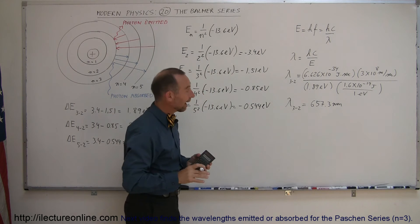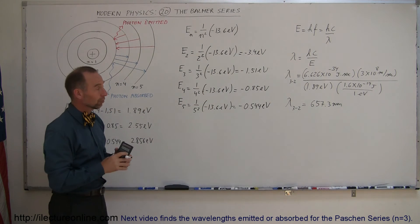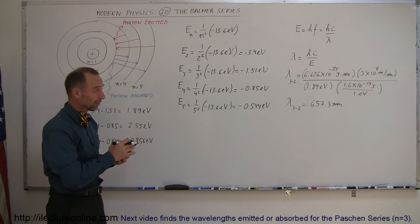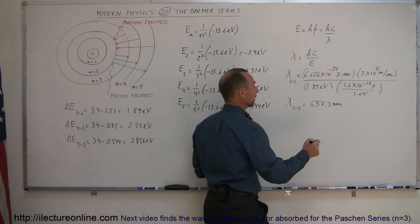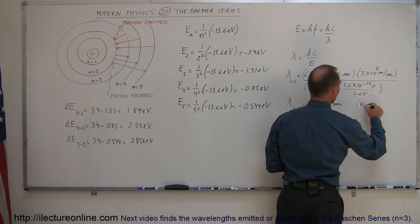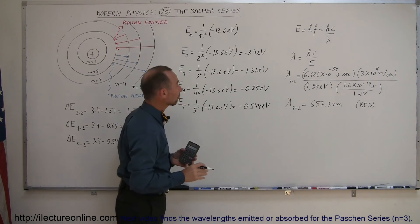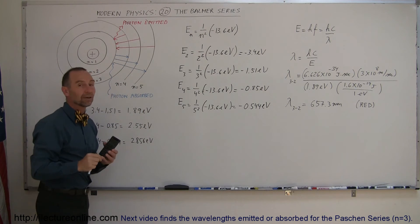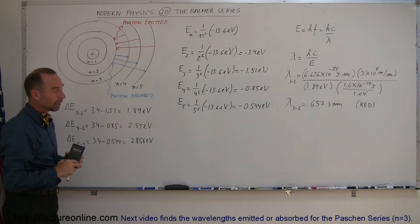That falls right inside the range of visible light, which is from 400 to 700 nanometers. 657.3 is close to 700, so that looks like it would be about a reddish color. So that photon would be red. The light coming from the electron jumps, when the electron jumps from the third down to the second level, is red visible light.